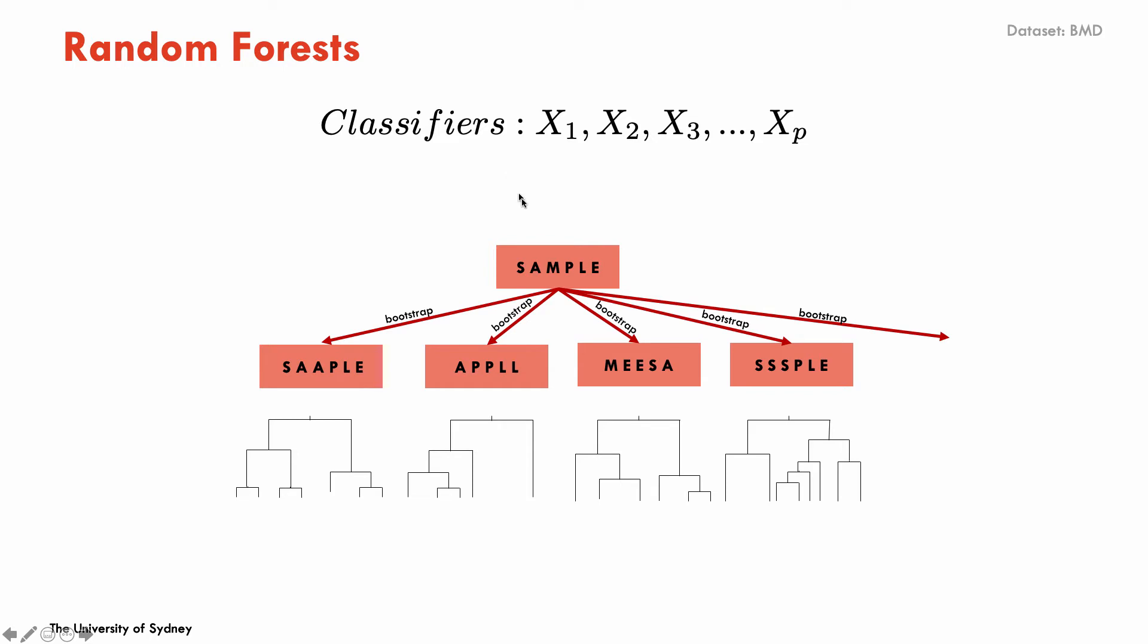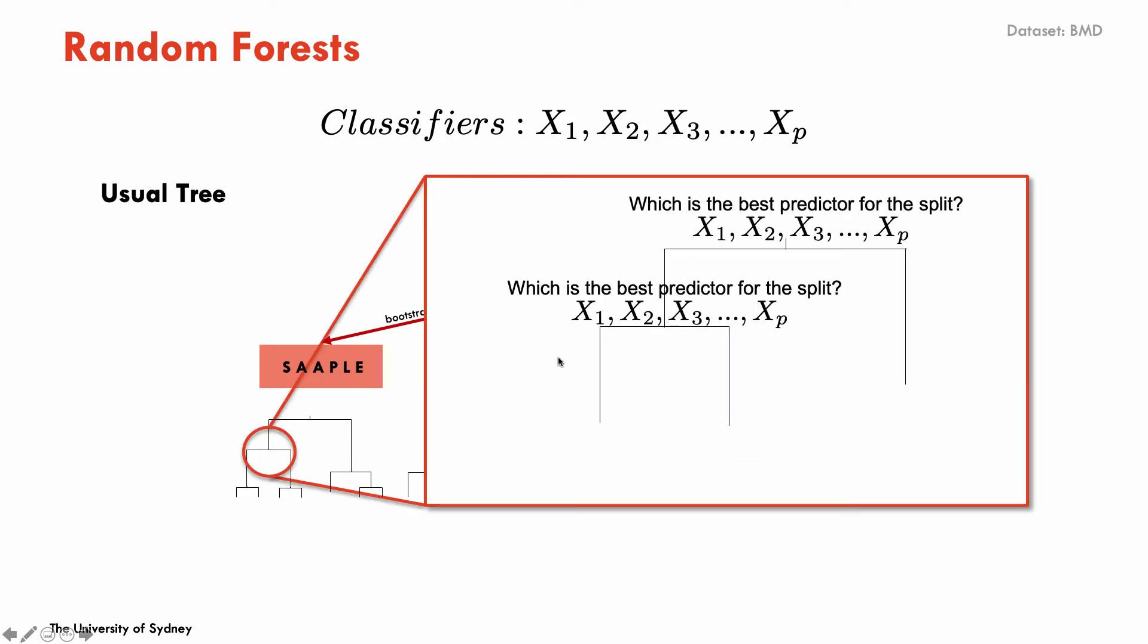As we mentioned before, the idea of bagging is to bootstrap the original sample, create multiple bootstrap samples, and for each sample grow the trees. So suppose that we have P predictors. When growing the trees, what we do at each node is evaluate the P predictors and see which one is best to split, to make the split and also the cutoff associated with that predictor.